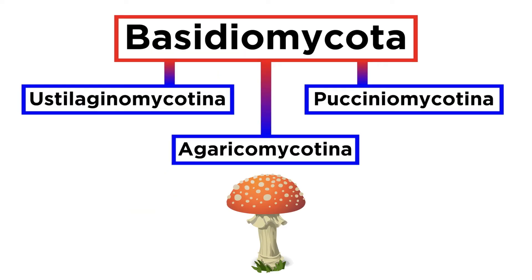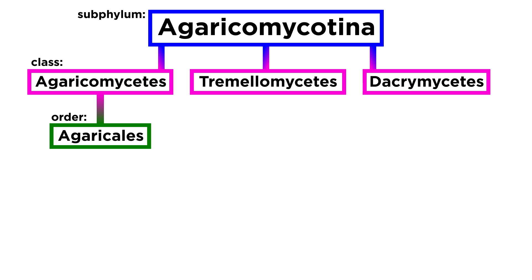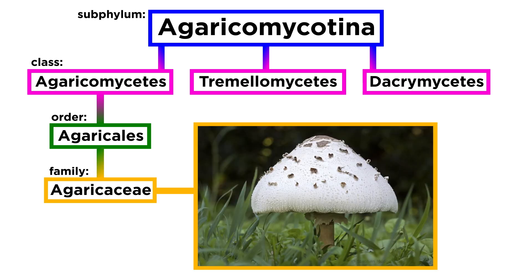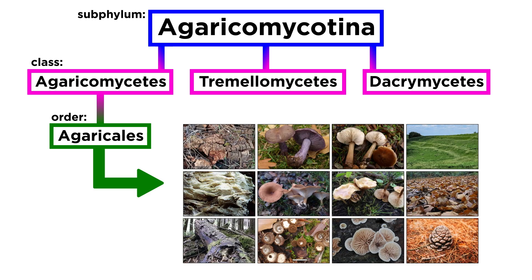Let us dive further into the phylum Basidiomycota, specifically in the class Agaricomycetes and the order Agaricales. In the previous tutorial we discussed a number of species in the family Agaricaceae. Over the next few tutorials we will discuss many more species and families within the order Agaricales, and we will see examples of fungi that encompass a wide range of the possible mushroom-forming species found in nature.